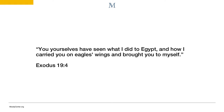Beginning in Exodus 19, God outlines what constitutes right behavior for the Israelites. The Lord begins the narrative by giving Moses his justification for obedience. In other words, God is saying, this is the authority that I have over you, when in verse 4 he says, 'You yourselves have seen what I did in Egypt, and how I carried you on eagles' wings and brought you to myself.' Therefore, the justification for Israel's obedience is rooted in the mighty acts of God surrounding the Exodus.